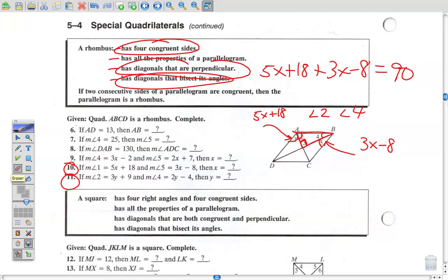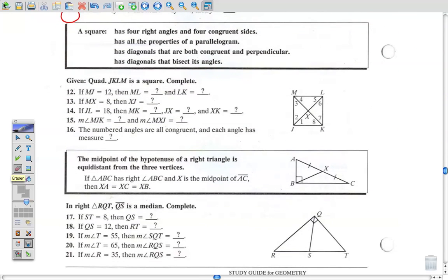All right, let's go down to 12 through 16, a square. Now let's look at the properties of a square. It has 4 right angles and 4 equal sides. As always, it has the properties of a parallelogram. The diagonals are both congruent to one another and they're perpendicular, and has diagonals that bisect its angle. So a square has a lot of the properties of everything above. Let's do a basic one, number 12. If MJ is 12, what's ML? Well, it's a square. All sides are equal, so it's got to be 12. What's LK? It's got to be 12, right? So that's just kind of the basics of the square itself.